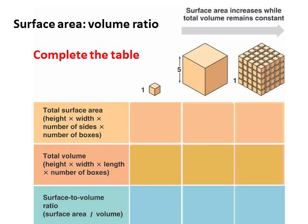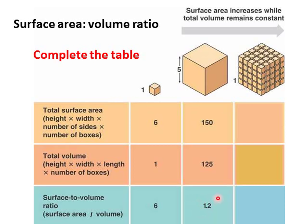We've talked about having a large surface area enabling efficient gas exchange. Something we need to link to surface area is the volume — we need to work out the surface area to volume ratio of organisms. If you work out the surface area for the second, slightly larger box, you'll find the surface area is 150 centimetres squared, the total volume is 125 centimetres cubed, and the surface area to volume ratio — surface area divided by volume — is now a lot less surface area compared to volume.